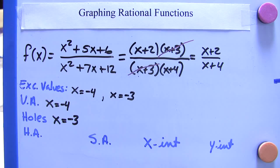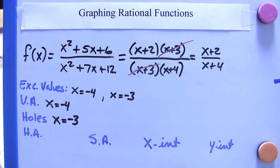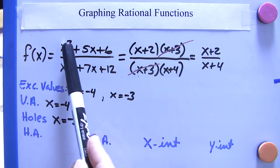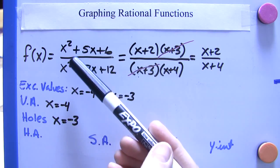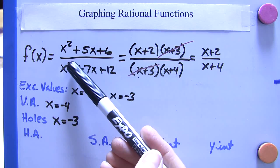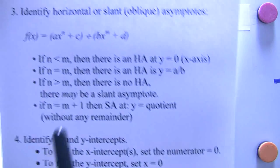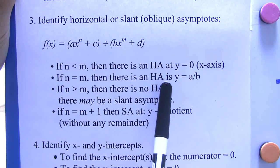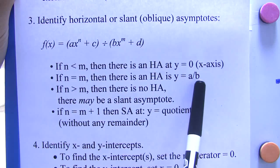Now, let's look for our horizontal asymptotes. We have to ask ourselves, first of all, what are the leading exponents here? It's x squared and x squared. How do they relate to each other? Well, they're the same. When n equals m, then there's a horizontal asymptote at y equals a over b.